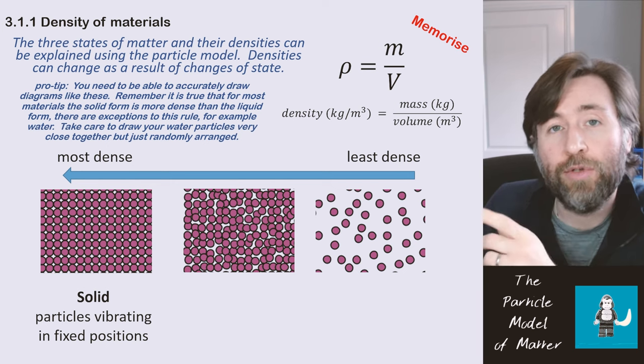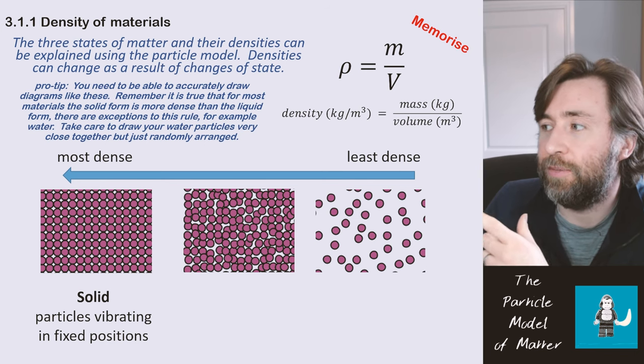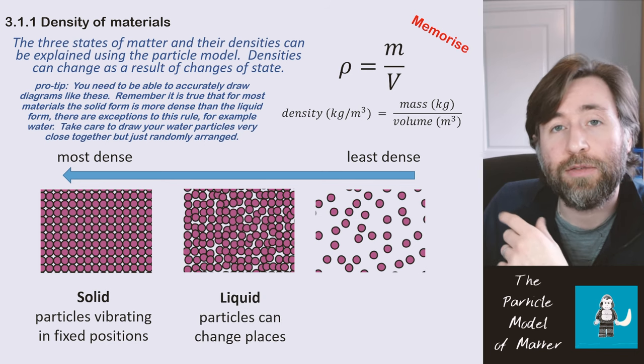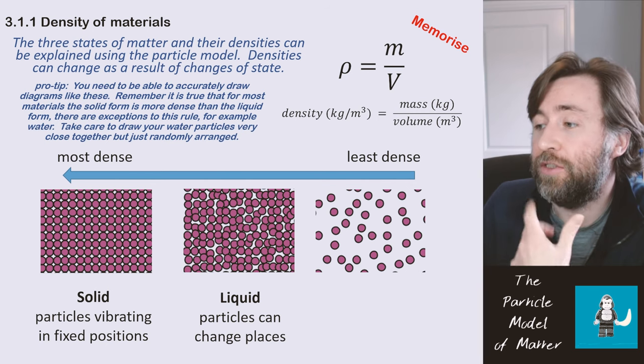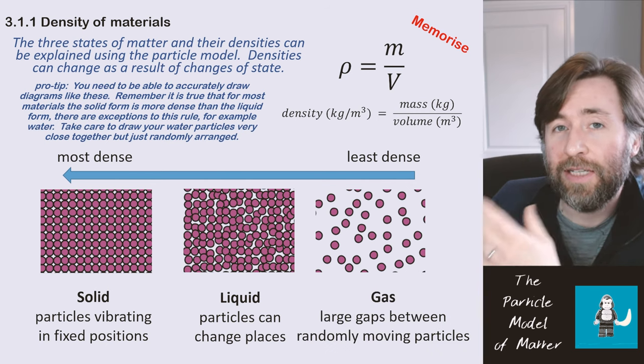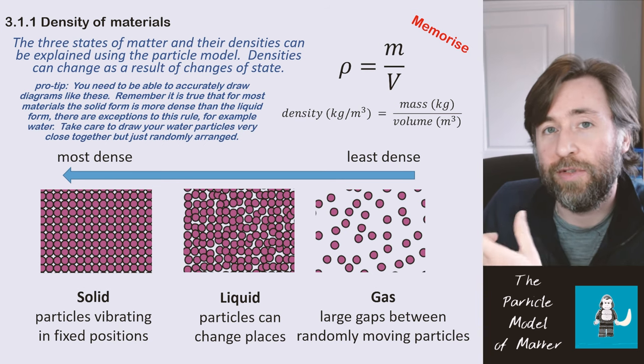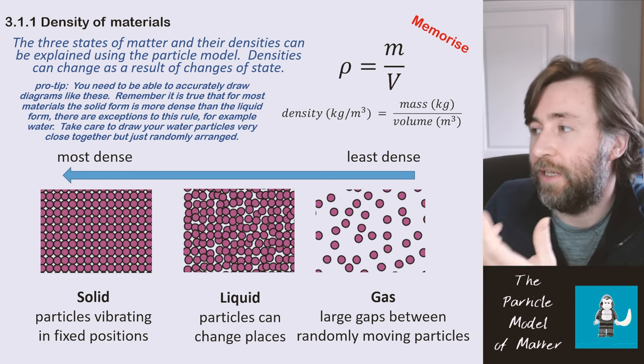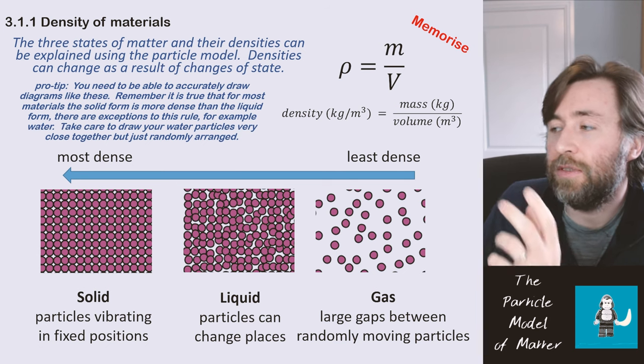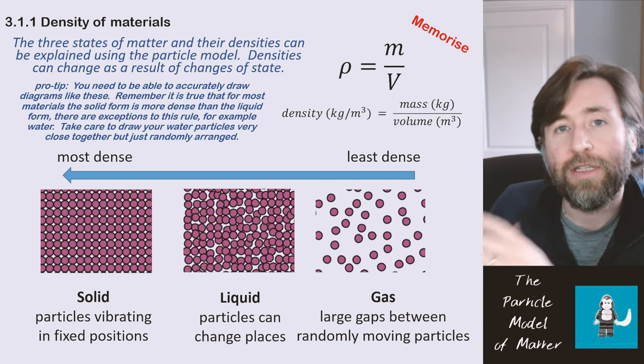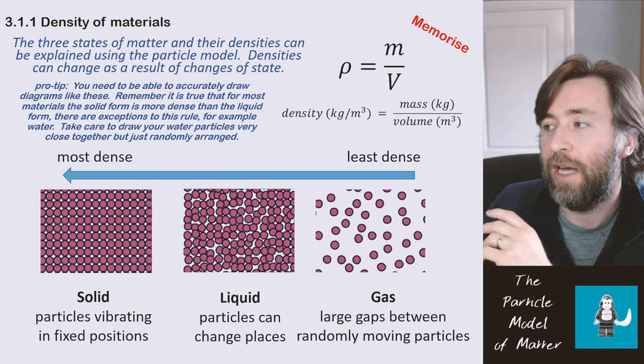So in a solid the particles are moving—they're vibrating but they're in fixed positions. In a liquid the particles are moving with more energy and now they can change places. And in a gas there are large gaps between the particles—that's the arrangement—and they are randomly moving at high speeds in all directions, that's their motion. So we use these particle pictures to sum up the arrangement of the particles and their motion.